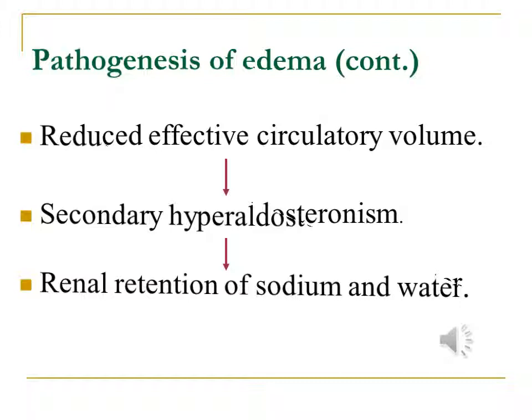This will make the kidney retain sodium and water in an attempt to correct the decreased blood volume. That retained sodium and water cannot stay inside the circulatory system because of the disturbance mentioned earlier, and it oozes out producing an increase in edema. The continued reduced blood volume results in a continuous stimulation of the suprarenal and a persistent state of secondary hyperaldosteronism, so the edema gradually increases with time.